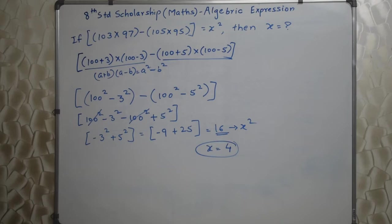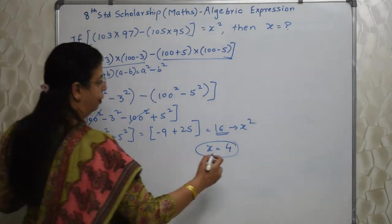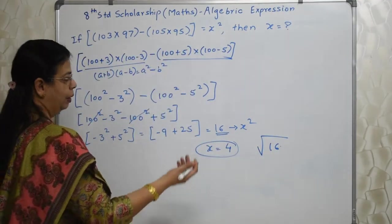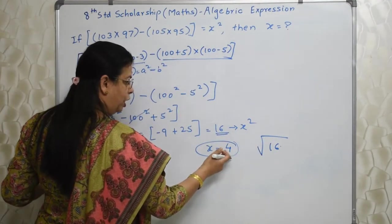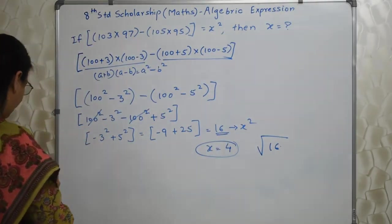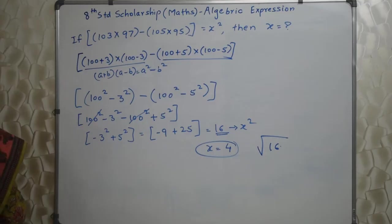Because 16 is the square of plus 4 as well as minus 4. But here only one option that too they have given root 16. They might give this, they might give plus 4, they might give minus 4. So you need to be very careful with the options given.